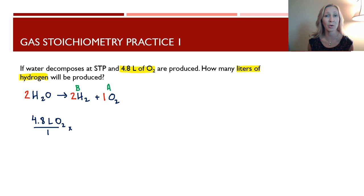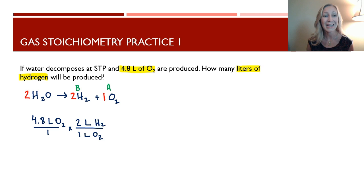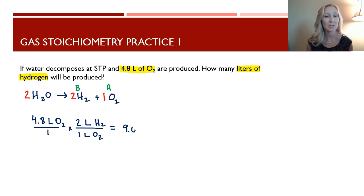We're given 4.8 liters of oxygen. All we need to do is multiply by the coefficient of B over the coefficient of A. For every one liter of oxygen produced, two liters of hydrogen are also created — a ratio of 2 to 1. So we take 4.8 times 2 over 1, and we get 9.6 liters of hydrogen produced in this reaction.